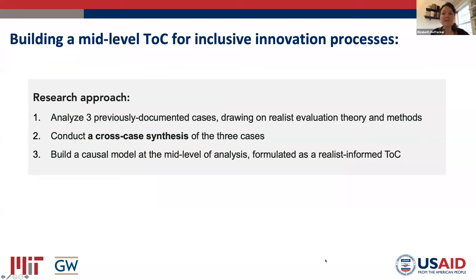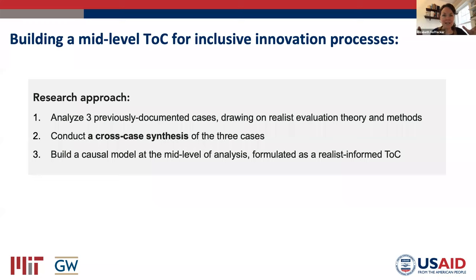I surveyed the existing literature, identifying a suite of examples of inclusive innovation projects that had certain core attributes — all trying to do the same thing with a similar intervention approach, but scattered across the world: a case from the east coast of Africa off Madagascar, a case from the Peruvian Andes, a case from the Philippines — different organizations, different implementation approaches, different details and activities. I did a cross-case synthesis of those three cases, first creating a theory of change for each based on existing research, and then going up a level to create a mid-level theory that abstracts across the three cases to understand how inclusive innovation was produced in each. I built that causal model formulated specifically as a realist-informed mid-level theory of change.